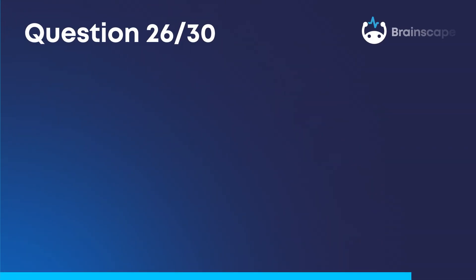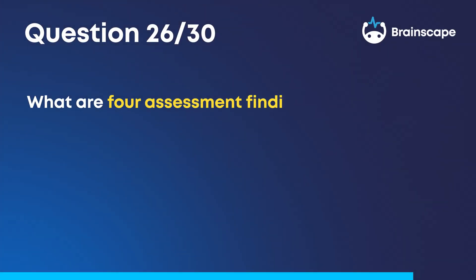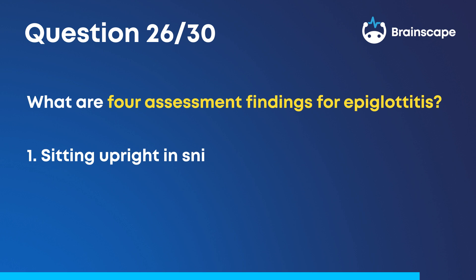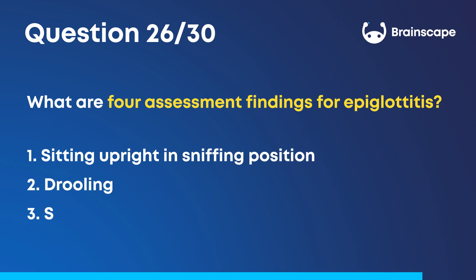Question 26. What are four assessment findings for epiglottitis? One, sitting upright in sniffing position. Two, drooling. Three, stridor. Four, muffled voice.